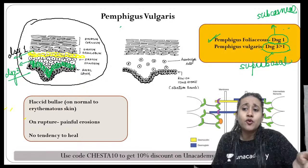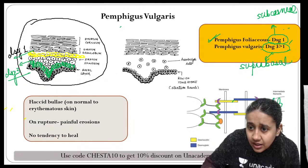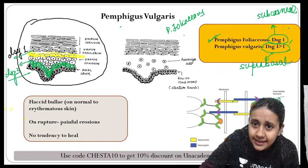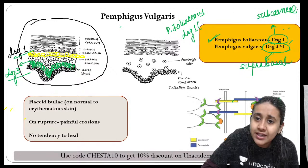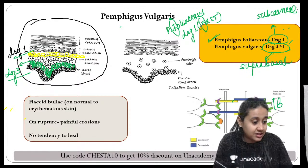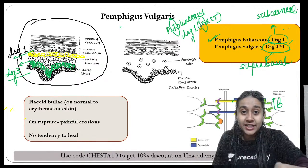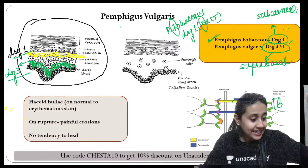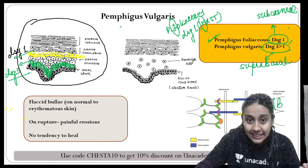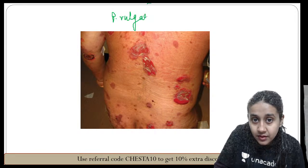A useful mnemonic: F of foliaceous and F of first — desmoglein 1 is also called desmoglein 'first.' So in pemphigus foliaceous, you have antibody against desmoglein 1. This makes the question very easy to remember.